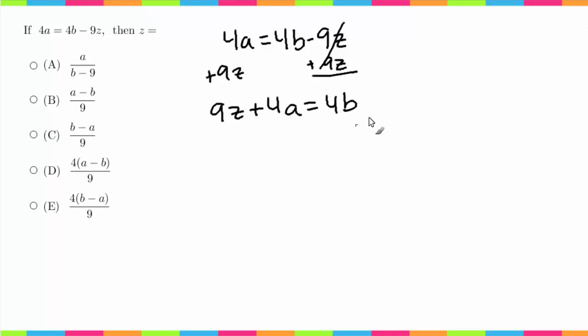Now I'm going to bring the 4a to the right. So I'm going to get 9z equals 4b minus 4a. I just subtracted 4a from both sides.